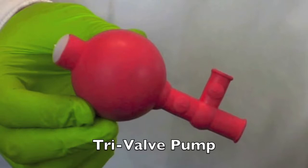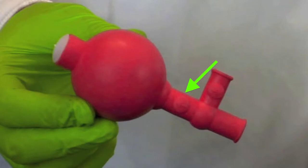A tri-valve pump has three valves: an A or air valve which releases air from the bulb, an S or suction valve used to fill the pipette, and an E or exhaust valve to empty any liquid remaining in the pipette tip.